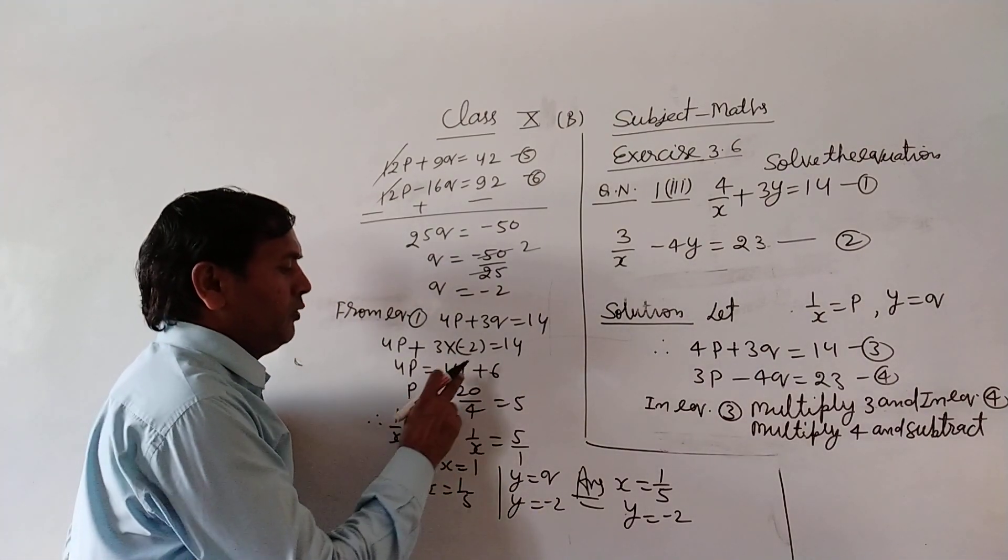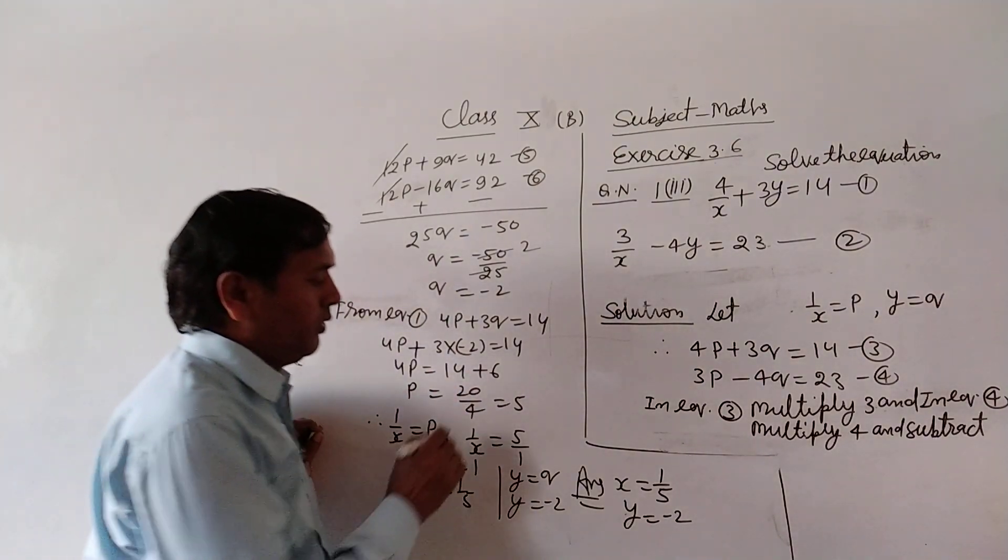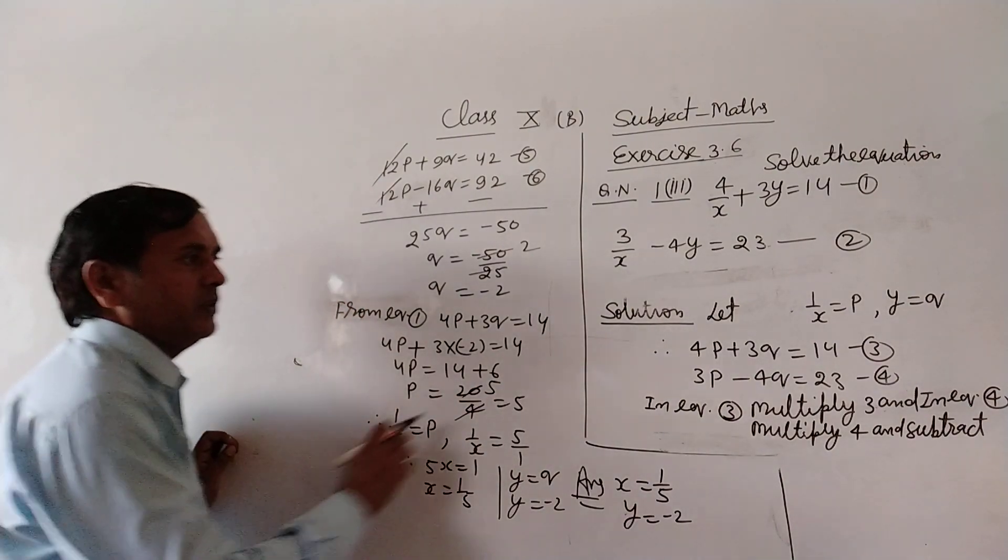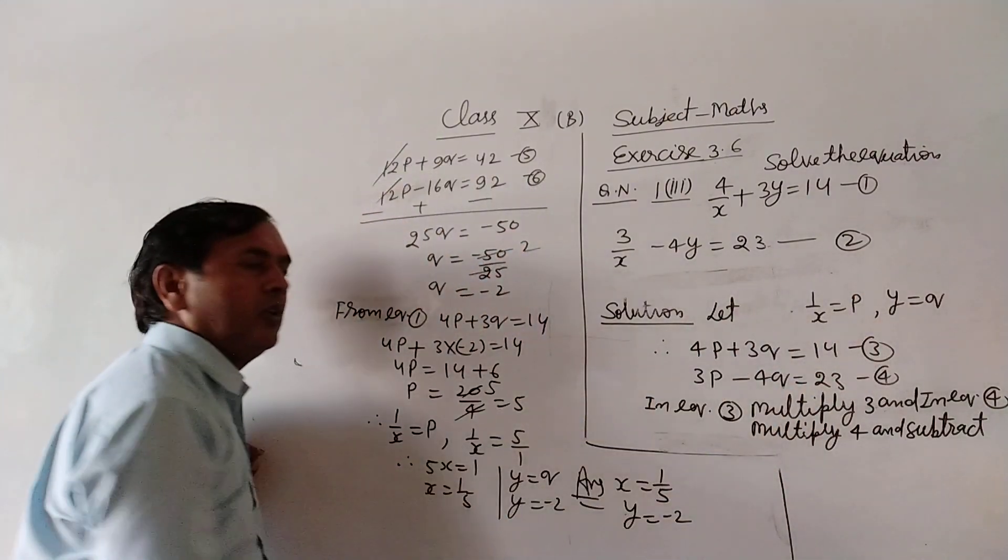Transfer. So p equals 20 upon 4. Simplify by dividing: p equals 5. So p is equal to 5. 1/x is equal to p.